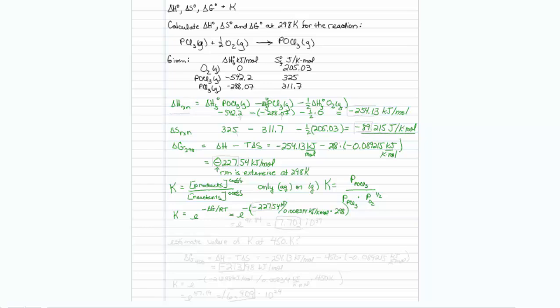So that means we are actually equal to E to the 91.84. That is a tremendous value. Let's hope our calculator can process it. And that turns out to be 7.70 times 10 to the 39th. Well, that is a very big K value. That means make a lot of product.